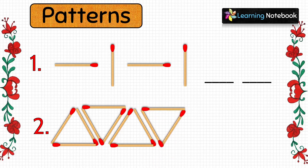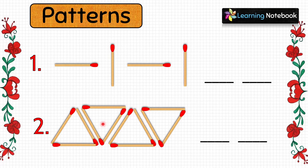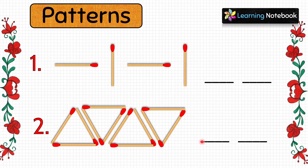Here you can see the pattern: one triangle, then inverted triangle, then one triangle, then inverted triangle again. So in the two blanks you are going to form one triangle and then an inverted triangle.